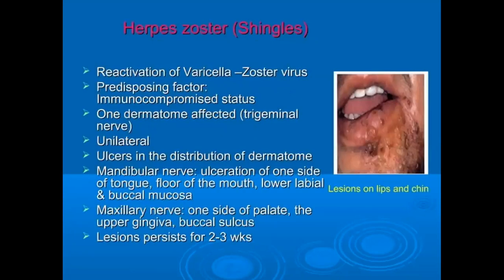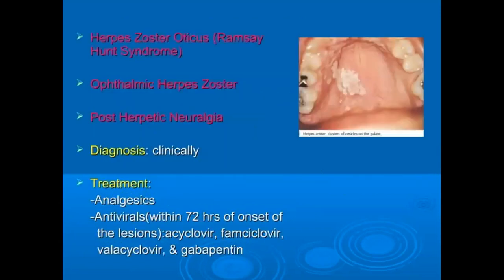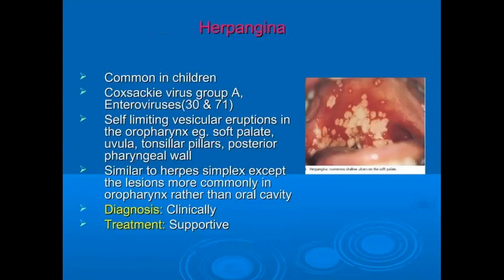Herpes zoster, also called shingles, is another oral manifestation. The lesions persist for two to three weeks. Diagnosis is clinical and treatment involves analgesics because of the pain. Antiviral therapy can also be used within 72 hours of onset of lesions. Other medications are also recommended.